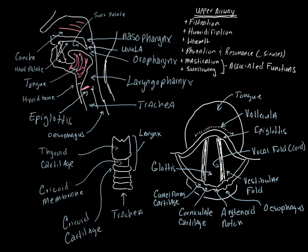The dividing line between the upper airway and the lower airway is the glottis — the glottic aperture — which is the opening of the trachea.